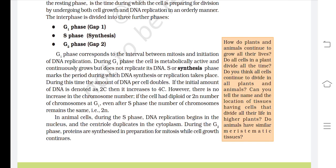G1 phase corresponds to the interval between mitosis and initiation of DNA replication. During G1 phase, the cell is metabolically active and continuously grows but does not replicate its DNA. S or synthesis phase marks the period during which DNA synthesis or replication takes place. During this time, the amount of DNA per cell doubles. If the initial amount of DNA is denoted as 2C, then it increases to 4C.